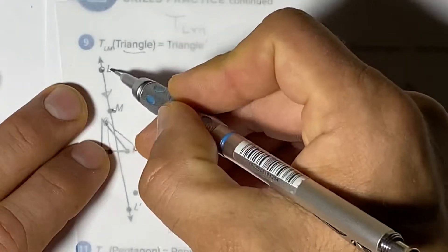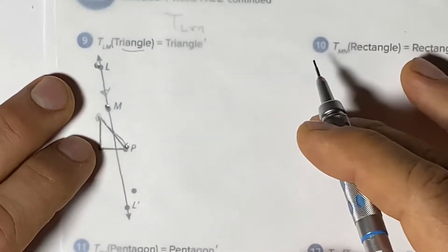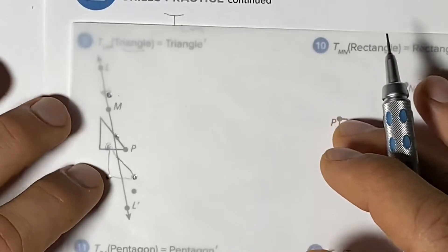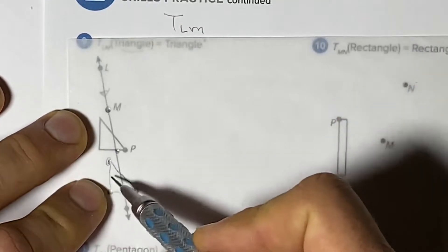So we're going to start at L here and slide it until it gets to M. And we're going to stay on that guideline. And when we do that we will end up here.